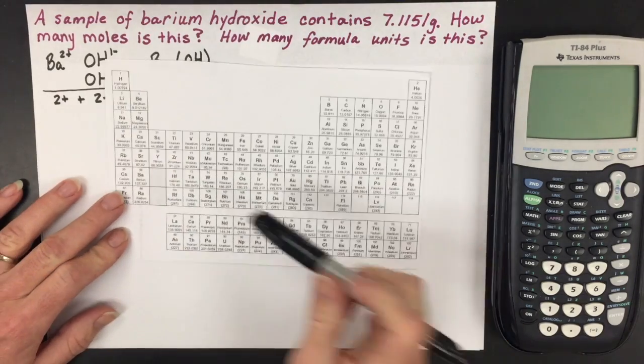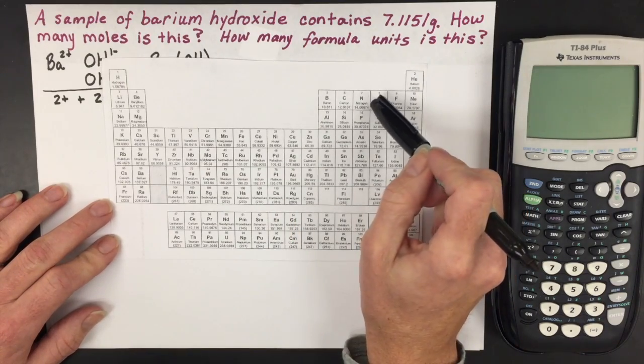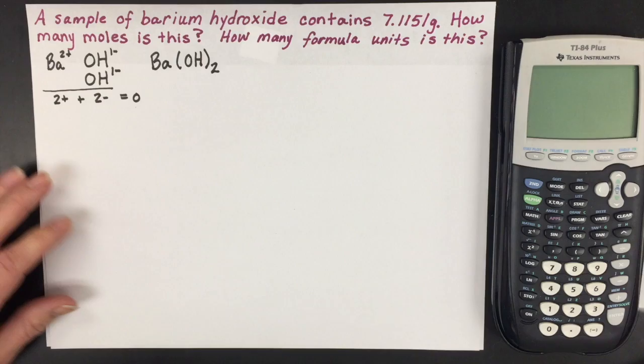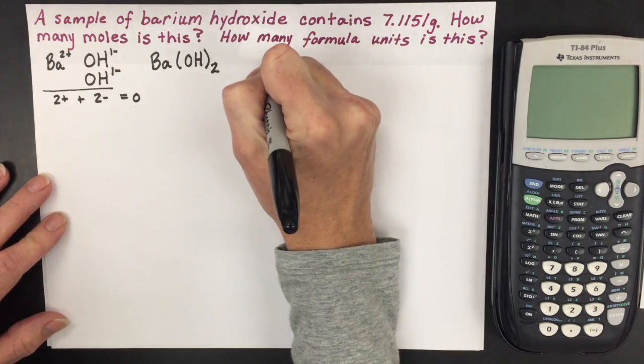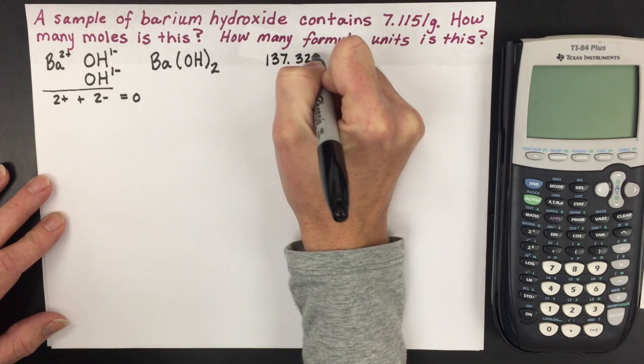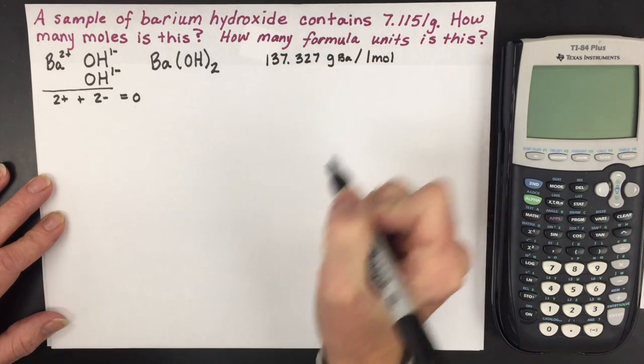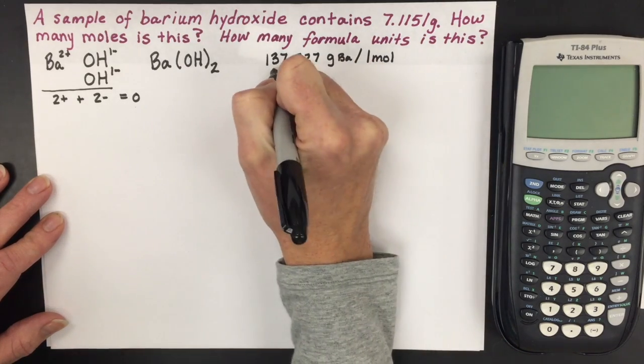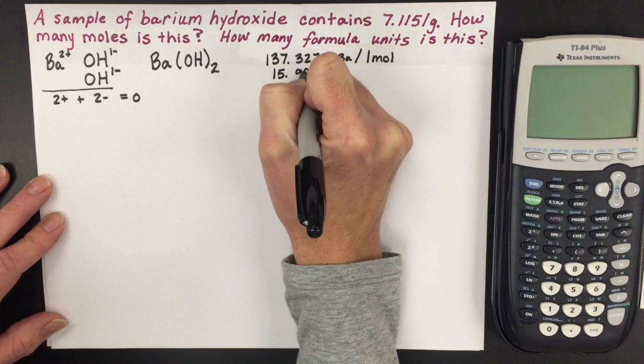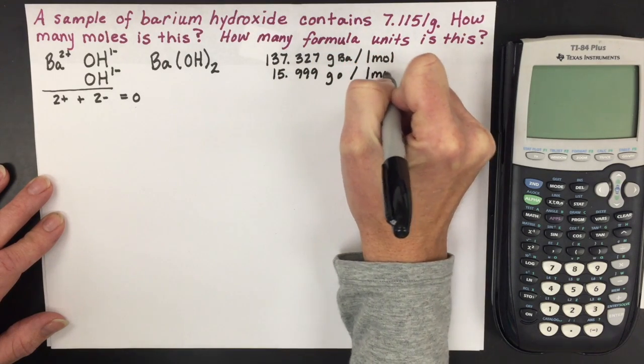To do that, you're going to need to look up the molar mass or the atomic mass of barium, oxygen, and hydrogen. Barium is 137.327 grams of barium for one mole of barium. Oxygen is 15.999 grams of oxygen for every one mole of oxygen.